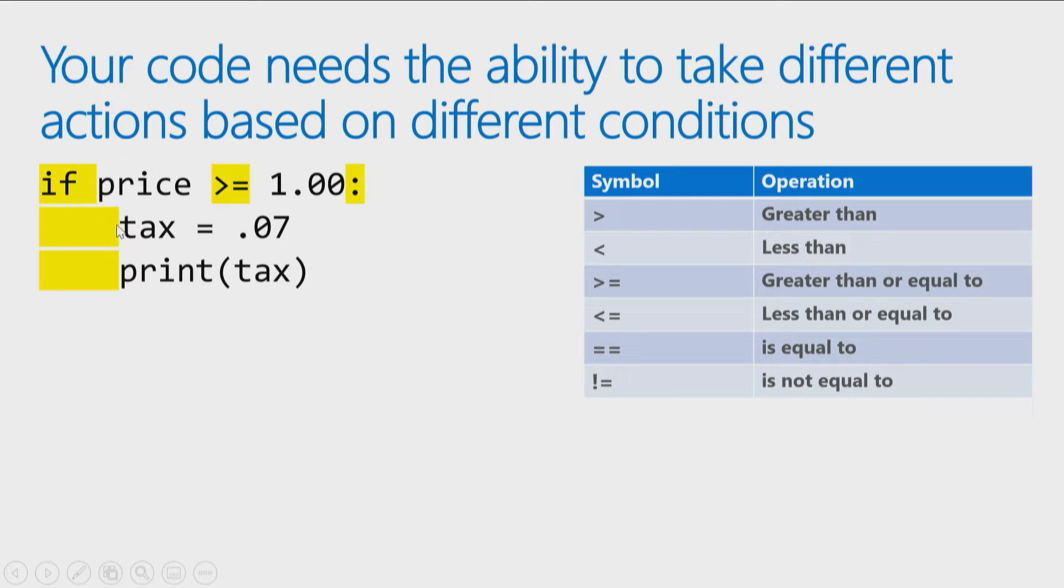It's not an accident that the word tax is moved over to the right here by four spaces, not a tab. Though if you're using Visual Studio Code, it'll auto-correct that for you, but try to get in the habit of using four spaces. Anything that is four spaces in will only be executed if the price is greater than or equal to $1.